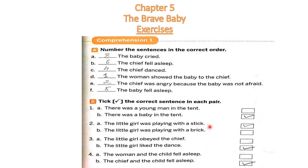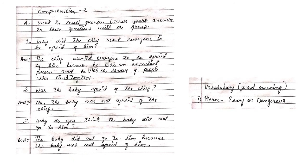The correct answer for number two is: the little girl was playing with a stick. Number three: 'the little girl obeyed the chief' or 'the little girl liked to dance' — the correct answer is: the little girl liked to dance. Number four: 'the woman and the child fell asleep' or 'the chief and the child fell asleep' — the correct answer is: the chief and the child fell asleep.